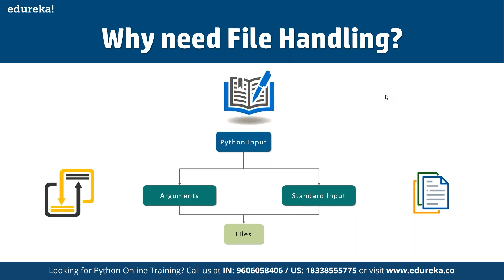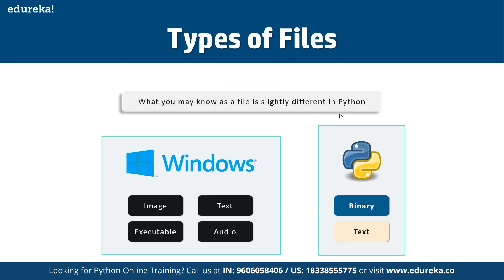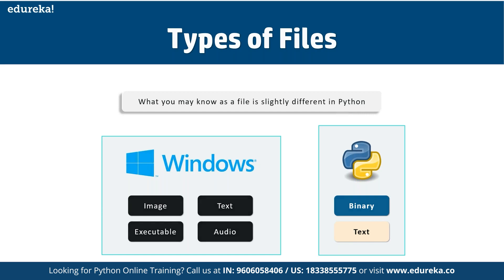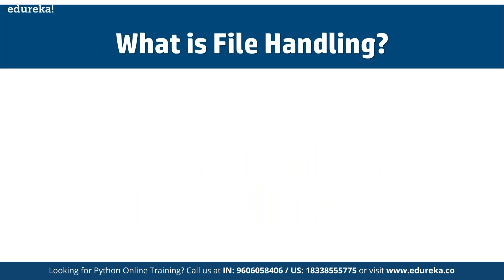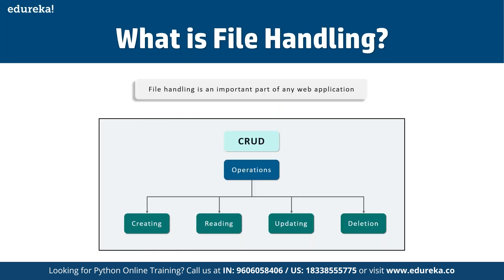There are multiple types of files available, and first we need to know what kind of file we are going to work with. In Windows, we have files in the format of images, text, executables, audio clips, documents, PDFs, and so on. In Python, we have either binary or text datasets that we can write. File handling is an important part of any web application — it allows us not only to handle files but also to perform multiple CRUD operations: create, read, update, and delete.